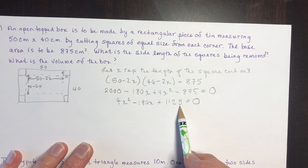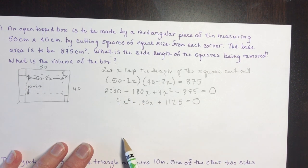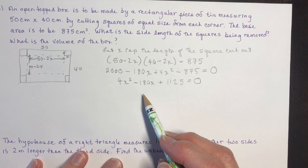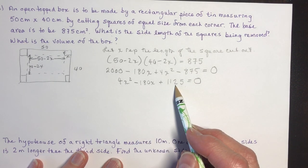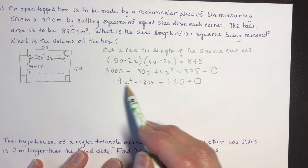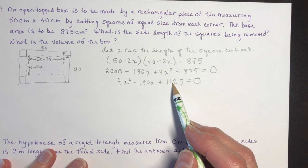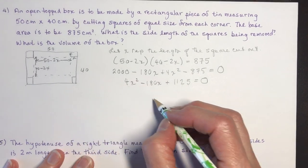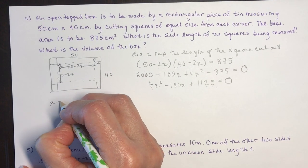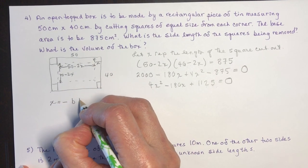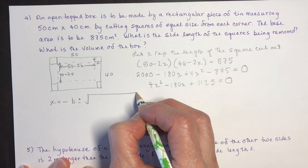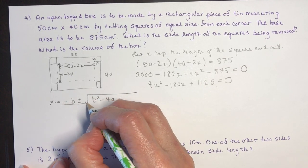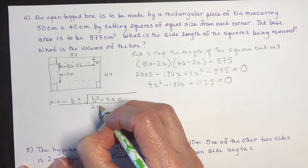There are no obvious common factors — this has to be divisible by 5, and it's an even number — so I'll use the quadratic formula since factoring would be too difficult. The quadratic formula: x equals negative b plus or minus the square root of b squared minus 4ac, all over 2a.